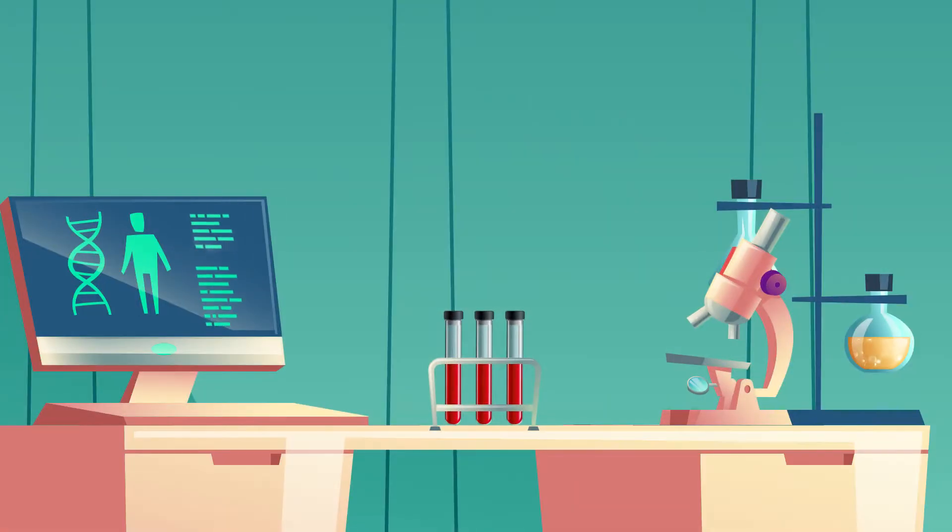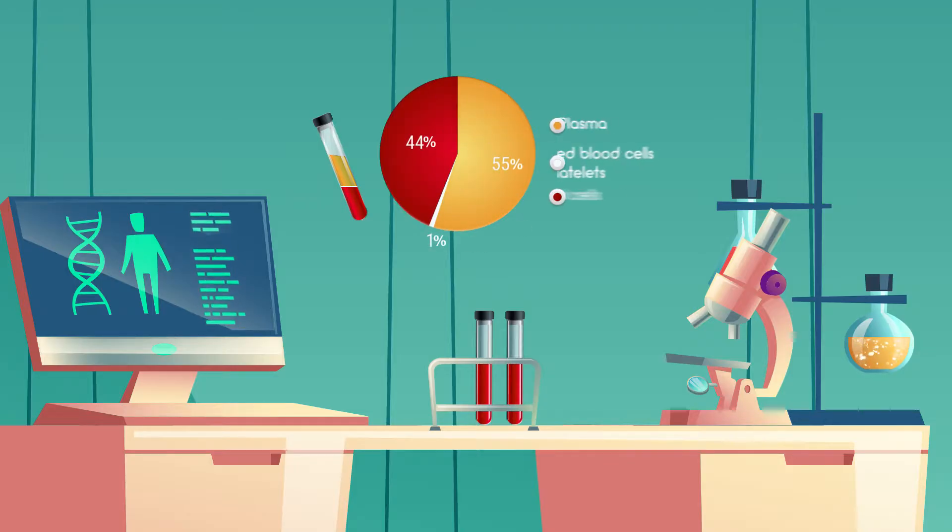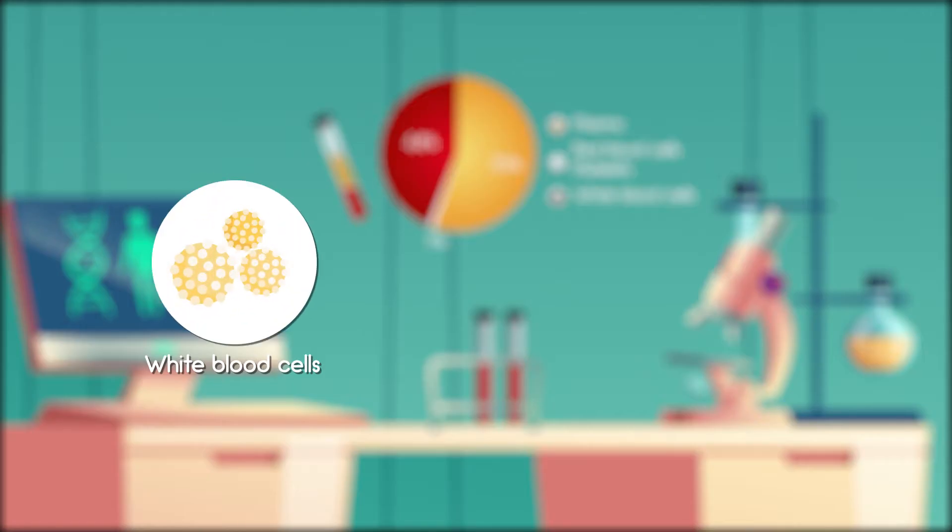CBC is a test that evaluates the cells that circulate in blood. Blood consists of three types of cells suspended in fluid called plasma: white blood cells, red blood cells, and platelets.